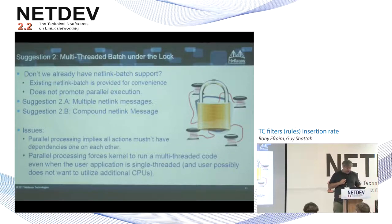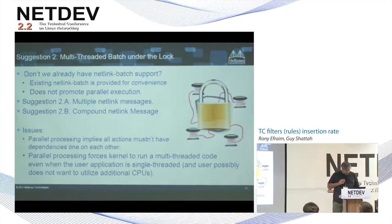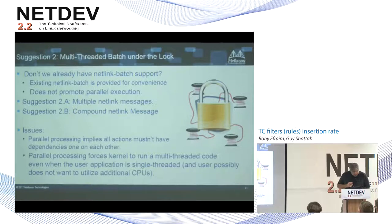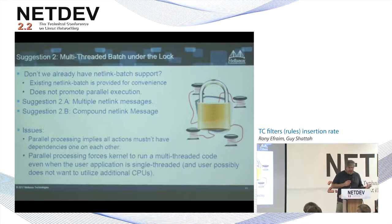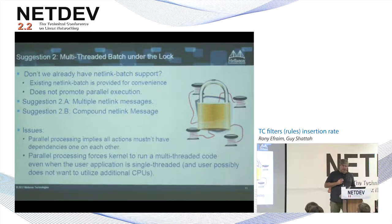We have two suggestions for implementation. Suggestion A is to use multiple netlink messages. Suggestion B is a compound netlink message. For both of them, parallel processing implies all actions must not have dependencies between them, because if we want to process them in parallel we can't enforce dependencies. The parallel processing forces the kernel to run multi-threaded — the user starts from a single thread and we process it on a few different cores. We're not sure this is ideal, but it's the only way to solve this issue.